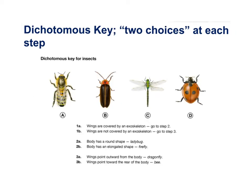Here is a dichotomous key structured in a linear fashion. To identify organism C: are the wings covered by an exoskeleton, or not? They're not, so we go to step three. Are the wings pointed outward from the body, or pointed toward the rear? They're pointed outward — so the organism is a dragonfly. Organism C is a dragonfly. Avoid using vague terms such as large, small, dark, light.